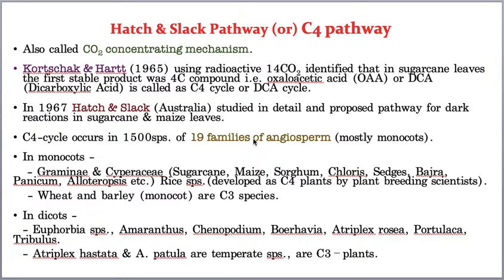The C4 cycle occurs in more than 1500 species included under 19 families of angiosperms. Of these 19 families, most are monocots, though it also occurs in dicots. When comparing the ratio between dicots and monocots, the monocot number is a little more.